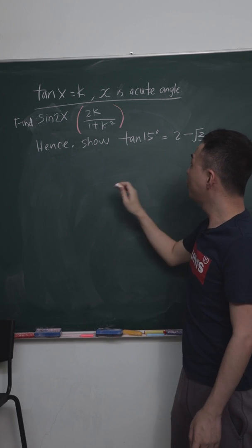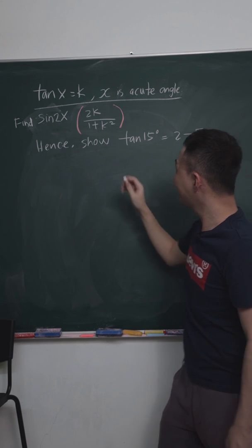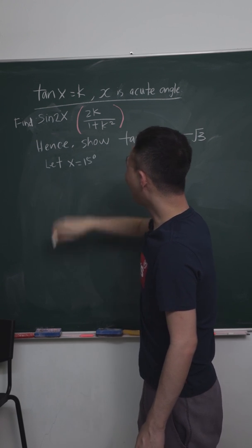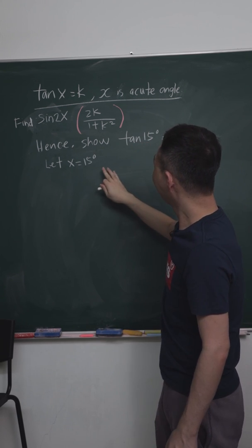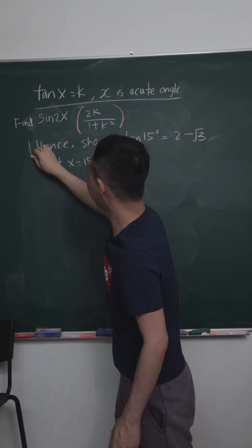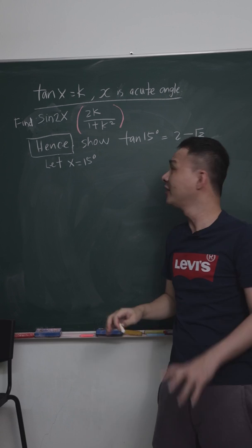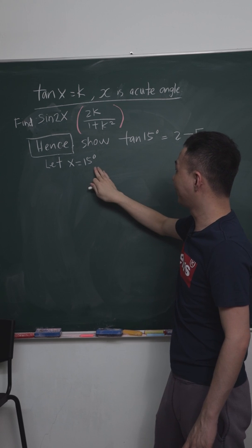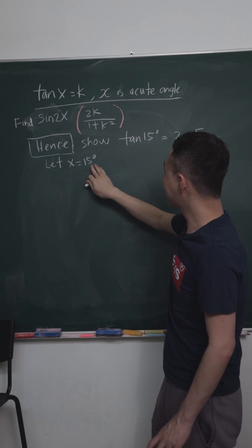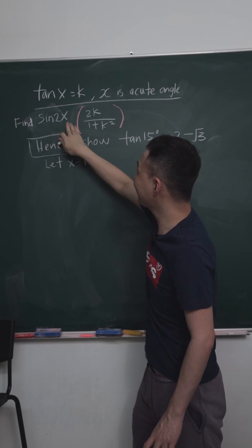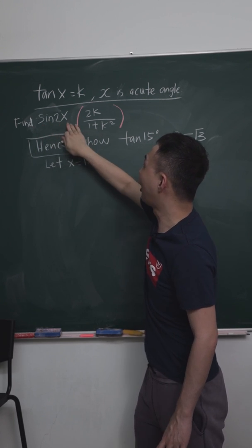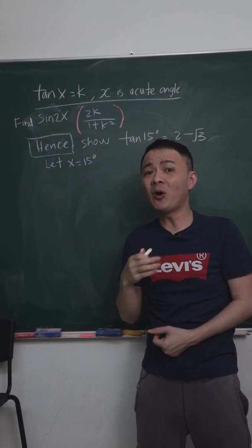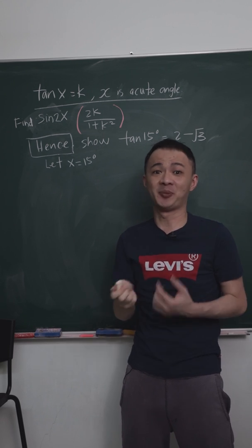So what I would do here is I would just let x equals 15 degrees. Why I want to do that? Because here I have double angle, I see the word hence. Because if I sub x equals 15 into 2x here, I kind of have sine 2 multiplied by 15. Sine 2 multiplied by 15 equals sine 30 degrees. And all of us know sine 30 degrees is basically 0.5 or 1 over 2.